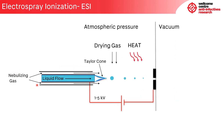In addition to the nebulizing gas, most electrospray sources also use an additional drying gas to help with solvent evaporation and heat the entire source block area for the same reason. This can be problematic for thermally labile compounds, but it does allow high flow rates of half a millilitre to a millilitre per minute to be used without requiring the flow to be split before entering the mass spectrometer.